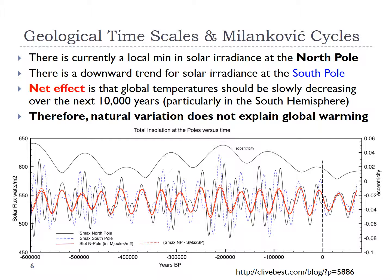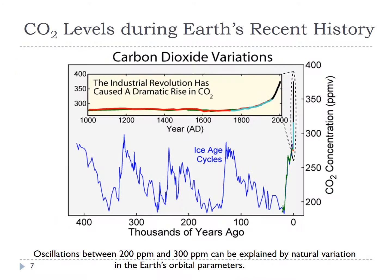Nothing happening at the 10-to-100-year timeframe would even show up on these Milankovitch cycles. In fact, natural variation would actually be predicting ever so slightly decreasing global temperatures. So we can rule out the sun, and we can rule out natural variation. And yet it doesn't take much of a change in the tilt of the earth to have a major effect on temperatures and CO2 concentrations, because there are feedbacks.